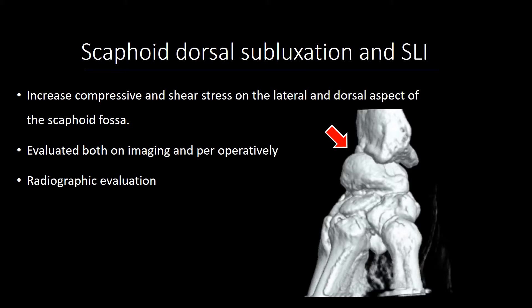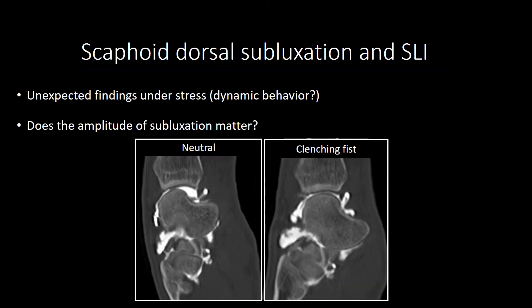Usually this is evaluated on conventional radiographs, but in our practice this was hindered by superimpositional issues and by the fact that for an accurate evaluation of dorsal subluxation you need a perfectly perfect profile view of the wrist, which was sometimes hard to obtain.